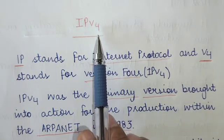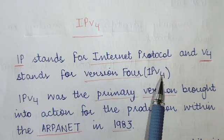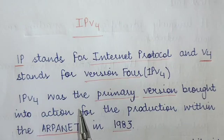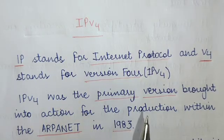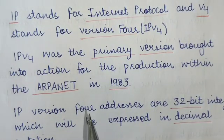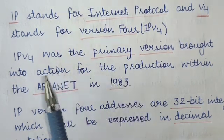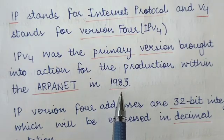IPv4 stands for Internet Protocol version 4, where v4 represents version 4 of the Internet Protocol. IPv4 was the primary version brought into action for production within the ARPANET in 1983. ARPANET stands for the Advanced Research Project Agency Network, which was basically used for communication for military purposes — a network that came into action to exchange data within the military. This was the first version of the Internet Protocol and it was brought into action in the year 1983.